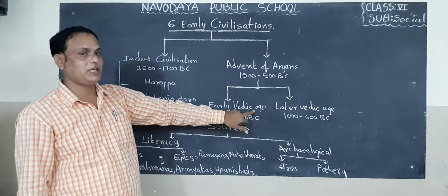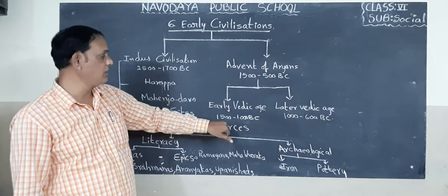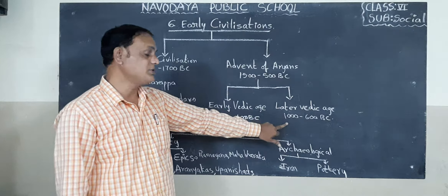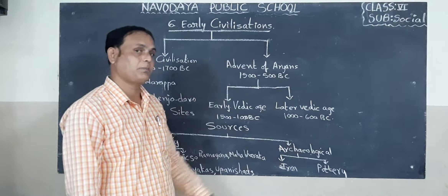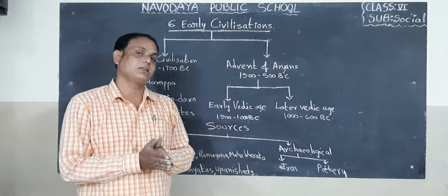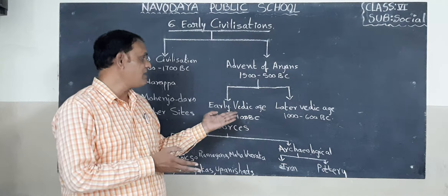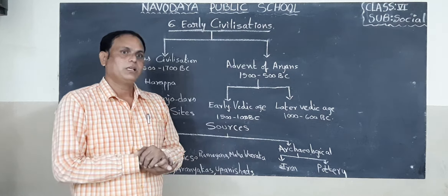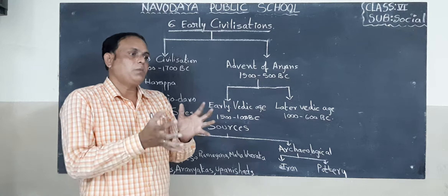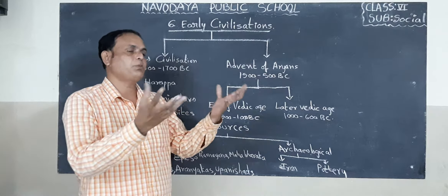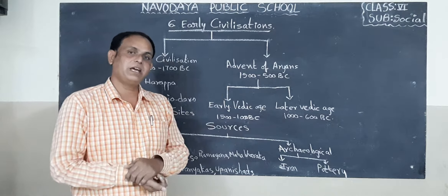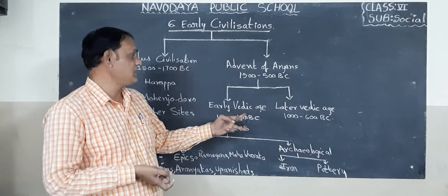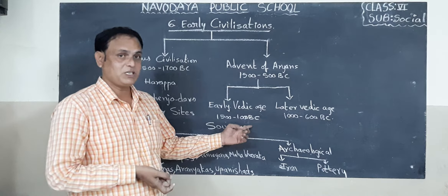Early Vedic age: the period between 1500 to 1000 BC. In the early Vedic civilization, the people chose one chief called Rajan. The kingship was not hereditary. The people had the right to choose any profession in society. There were no caste barriers, no sati system, and no child marriage at the time of early Vedic civilization.